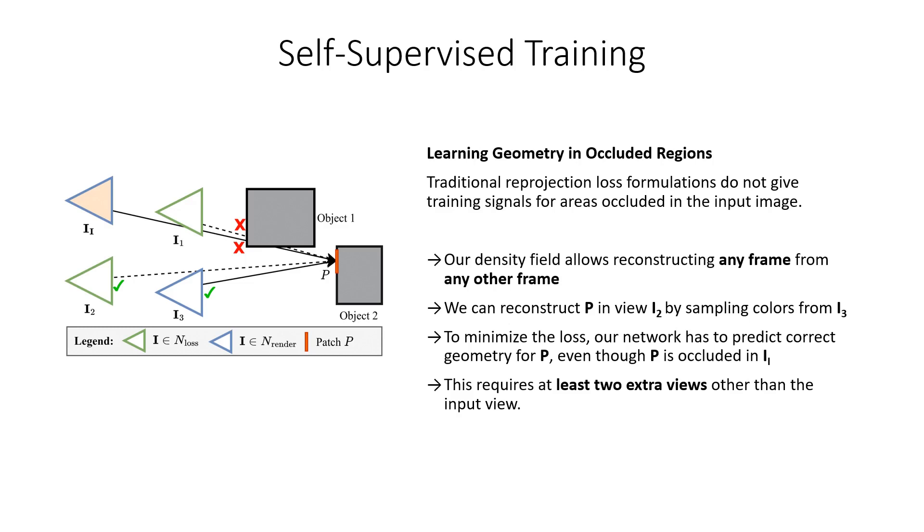Consider an area P of the scene, which is occluded in the input image, but visible in two other frames, image 2 and image 3, as depicted in the figure. During training, we aim to reconstruct this area in image 2. The reconstruction based on colors sampled from image 3 will give a clear training signal to correctly predict the geometric structure of this area, even though it is occluded in the input image.